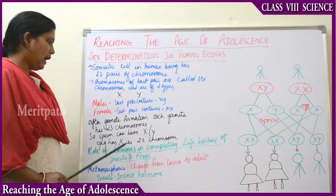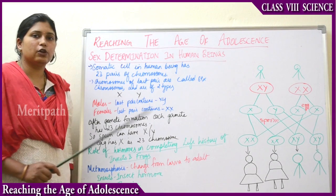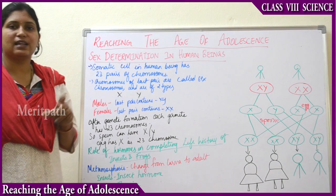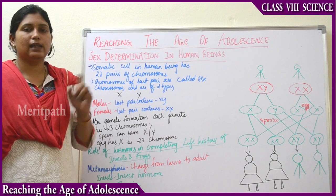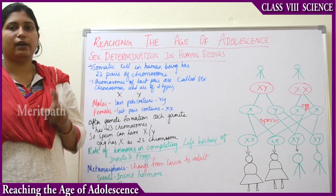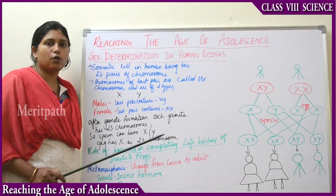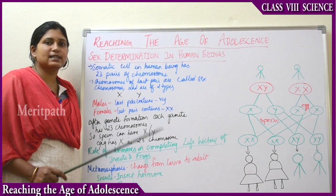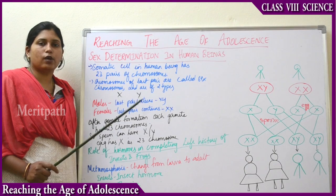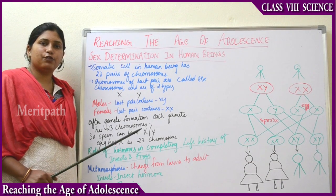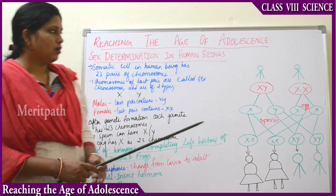The egg has only X as the 23rd chromosome, because as stated earlier, 22 pairs are similar in both males and females. Only the last pair — the 23rd pair — makes the difference, and this 23rd pair of chromosomes is known as sex chromosomes. It can be either X or Y in males, whereas in females it is X and X.